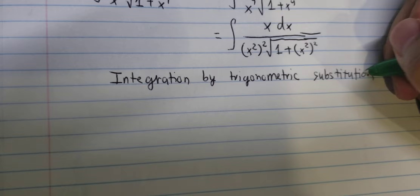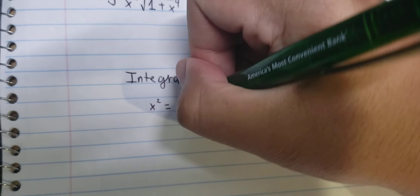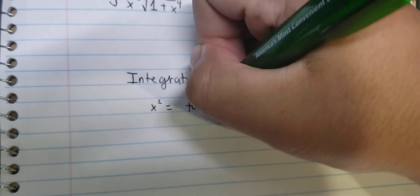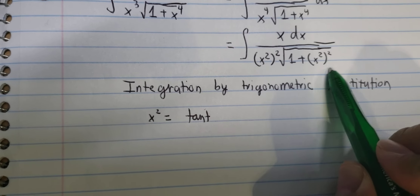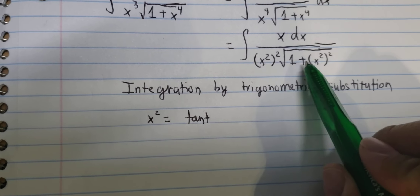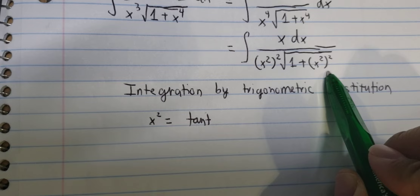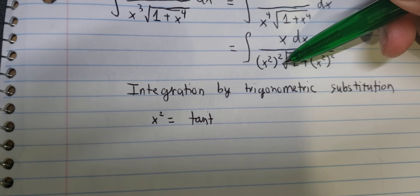Now we can use integration by trigonometric substitution. So I will put x squared equals to tan(t), because if I put this one in here, we have 1 plus tan(t) squared, which is about secant of t squared.